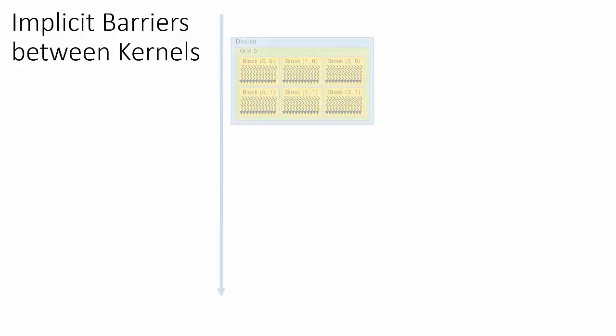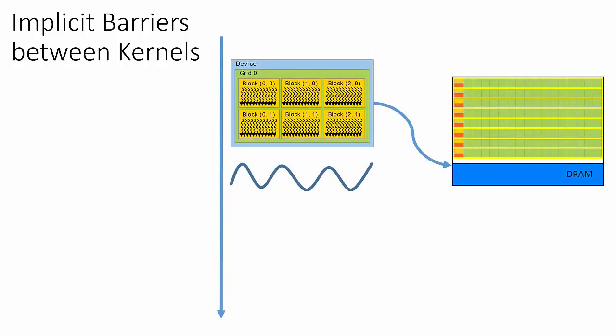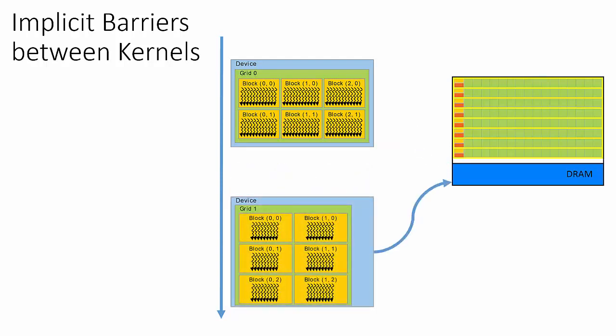So as we've seen, the host and device operate asynchronously, unless the host code is explicitly specified to wait on the device. However, the execution of consecutive kernel launches do operate synchronously, which can be thought of as an implicit barrier between kernel launches. For example, if we launch two kernels consecutively, we are guaranteed that the grid from the second kernel launch will not be scheduled to execute on the device until the first kernel has completed its execution.